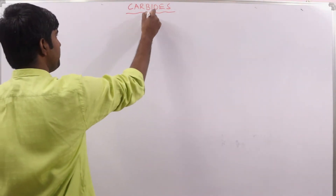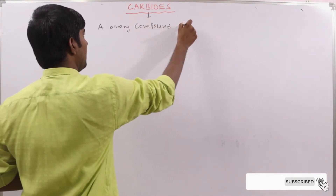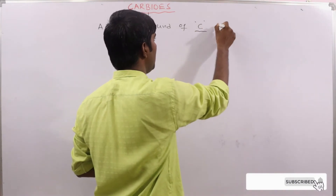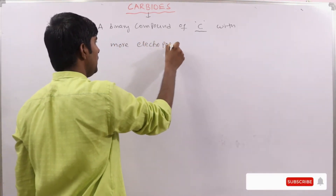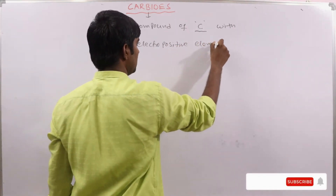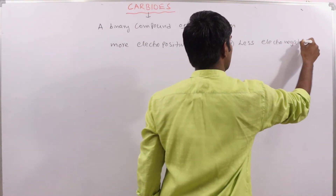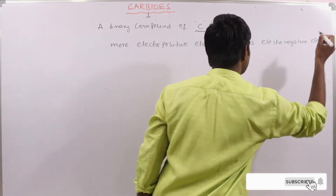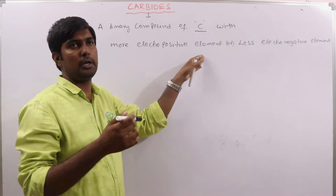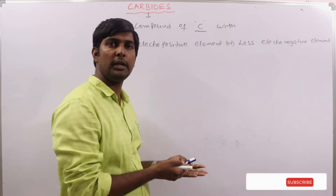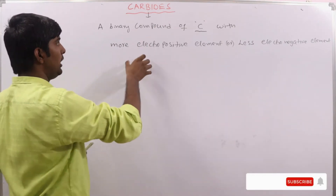A carbide is a binary compound of carbon with a more electropositive element, or we can say a less electronegative element, is called a carbide. More electropositive means definitely less electronegative, and more electronegative means less electropositive.